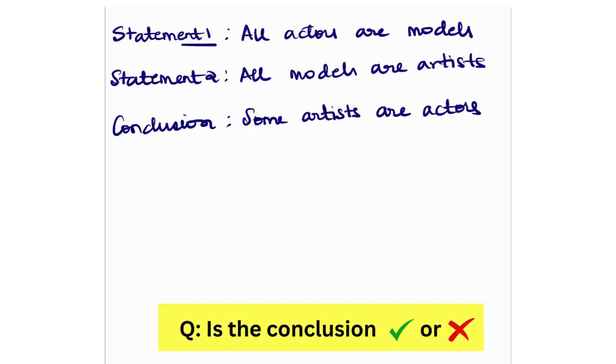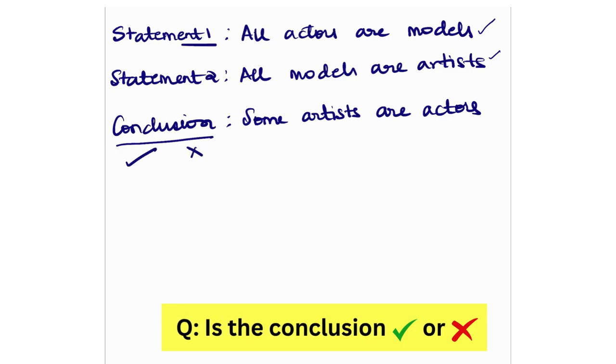All right, let's move towards the problem. So in this problem, there are two statements. Statement number one is all actors are models. And statement number two is all models are artists. And what the conclusion is? The problem says some artists are actors. And the question is, is this conclusion right? Or is this conclusion wrong?